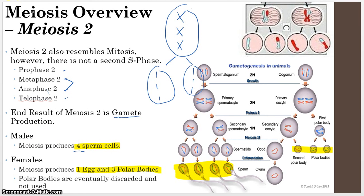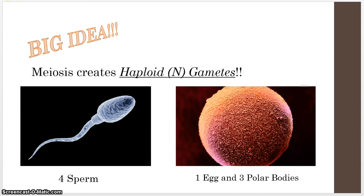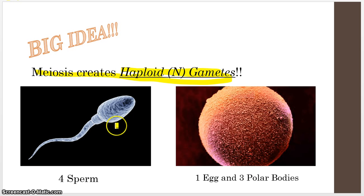To sum up, the big idea is that meiosis creates haploid cells — gametes. From meiosis, males get sperm and females get one egg and three polar bodies. That's big idea number one about meiosis, but it's not the whole story.